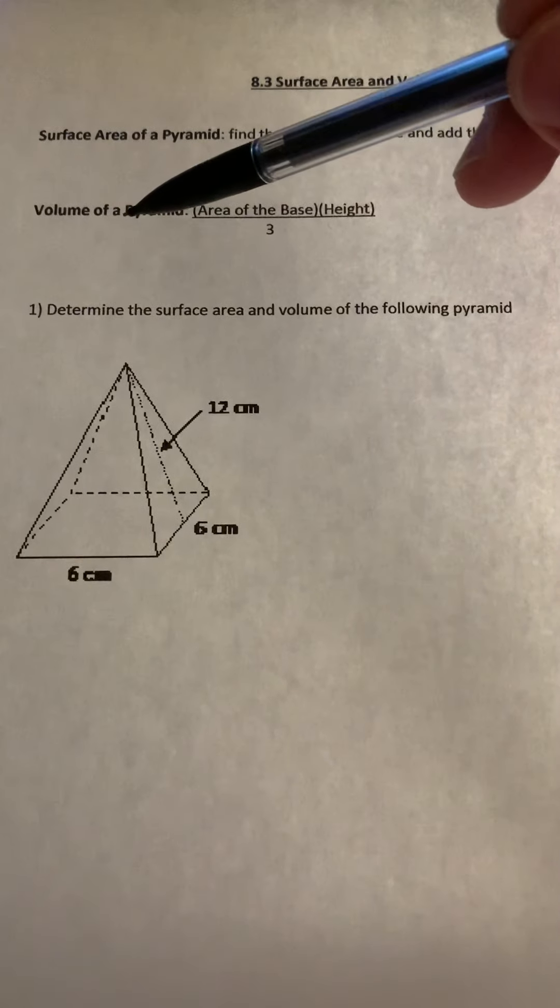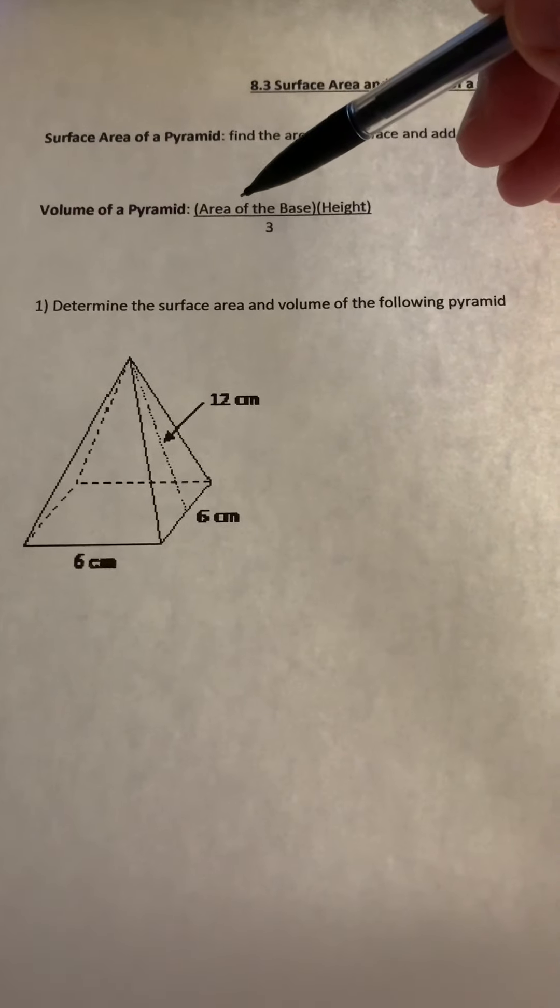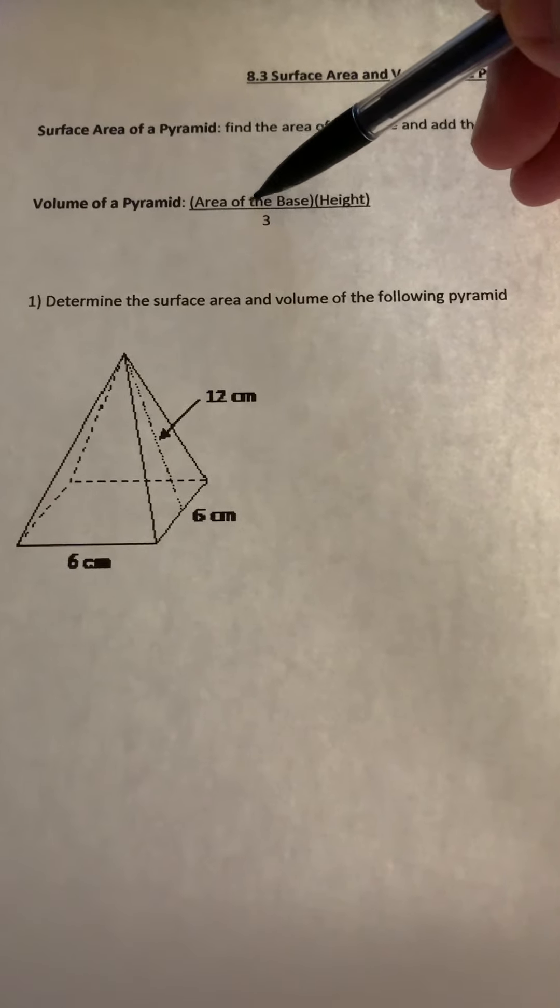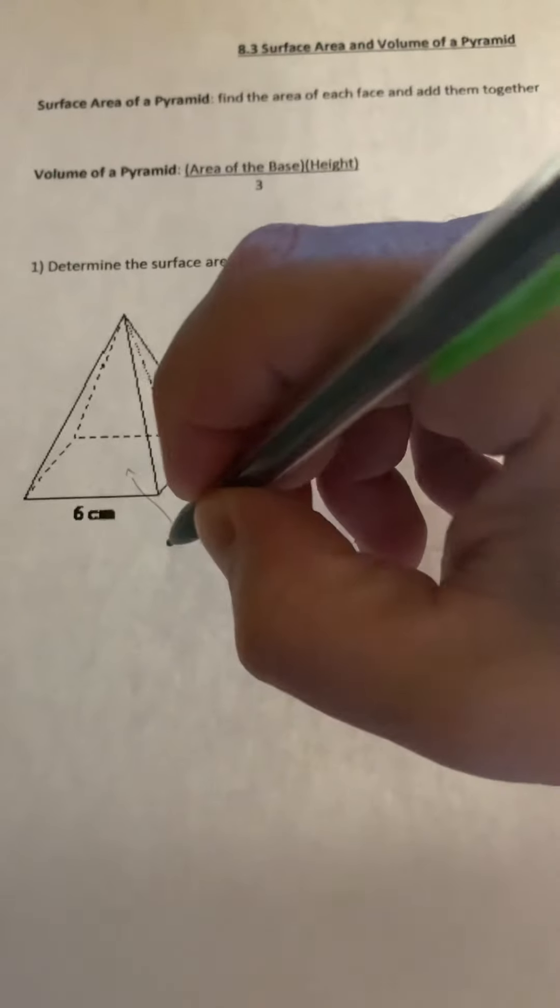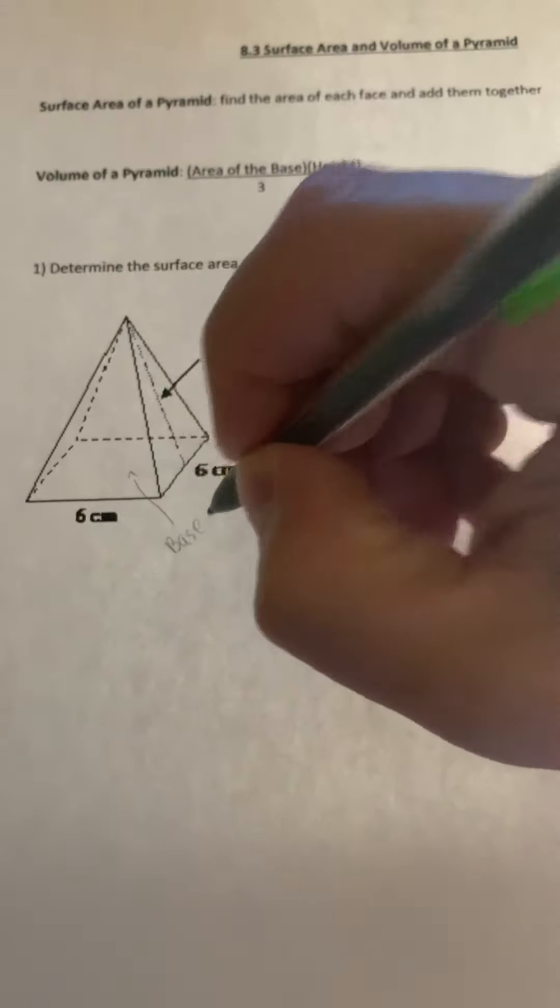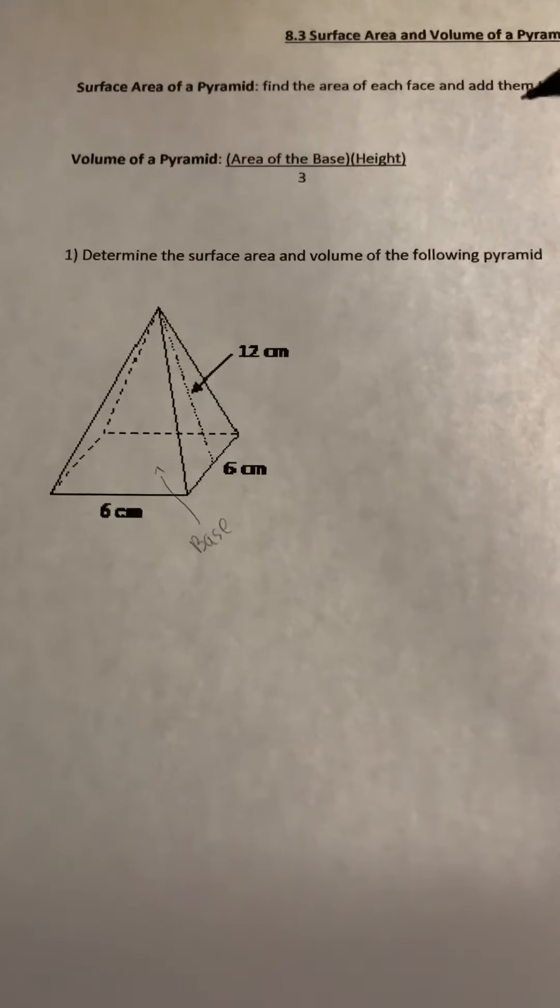When you're finding the volume of any type of pyramid, what you're going to do is find the area of the base. So the base is the bottom, so here is the base. That's the bottom, in this case the square at the bottom, that's the base.